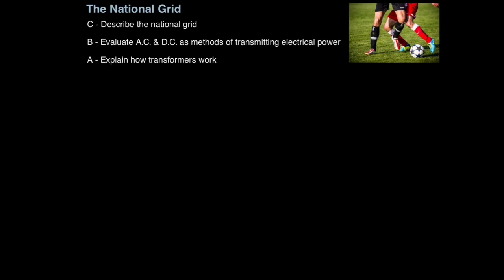In this lesson we're going to look at the national grid. The first aim is simply describe what the national grid is, then evaluate the costs and benefits of AC and DC as methods of transmitting electrical power, and then finally explain how transformers work.